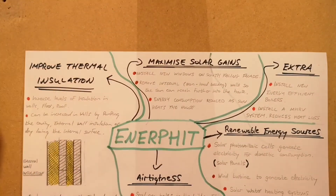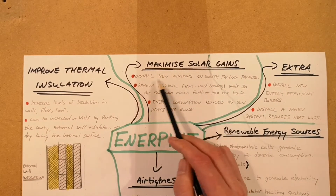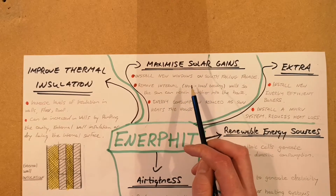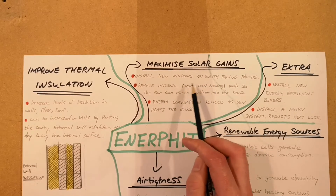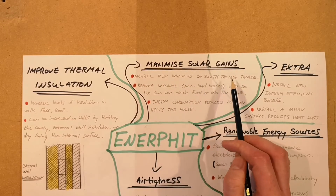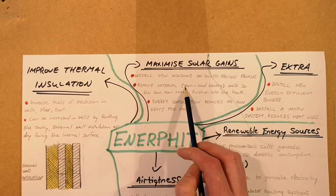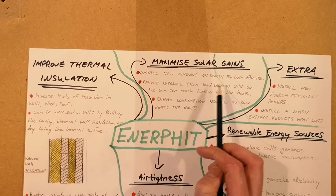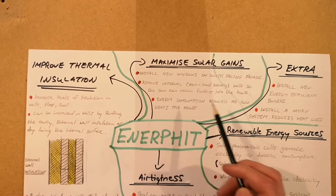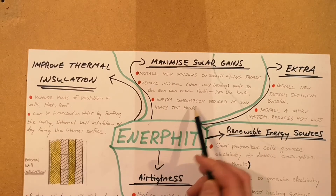The first heading we're very familiar with from the passive house is maximizing solar gain. In an older building you might have to install new, larger windows on the south-facing facade. You can also remove internal non-load-bearing walls so that the sun can reach farther into the house, reducing energy consumption as the sun heats the house.